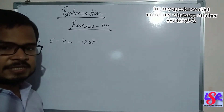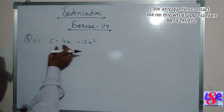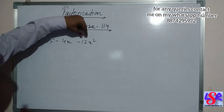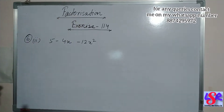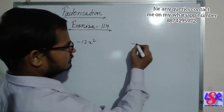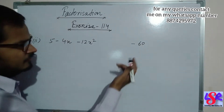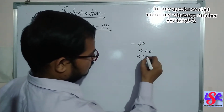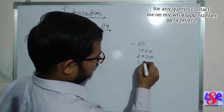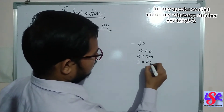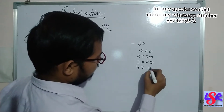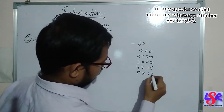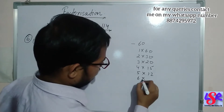Now let's see question number 6, second part. Here we are having 5 minus 4x minus 12x square. We multiply 5 by minus 12 to get minus 60. The factors of 60 are 1 into 60, 2 into 30, 3 into 20, 4 into 15, 5 into 12, and 6 into 10.